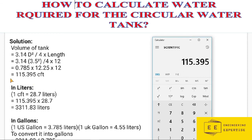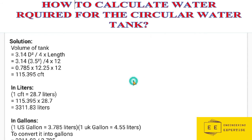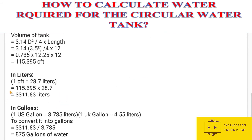We have the volume of 115.395 cubic feet. As we know, one cubic foot contains 28.7 liters of water. So we will multiply the volume of the tank by 28.7 to calculate the total number of liters required to store in the water tank. Let me calculate it on the calculator.